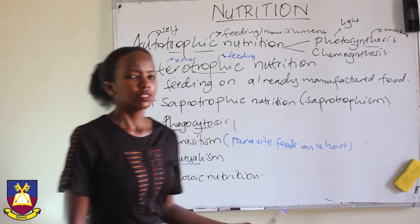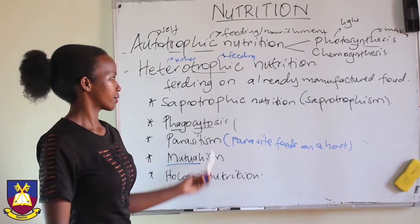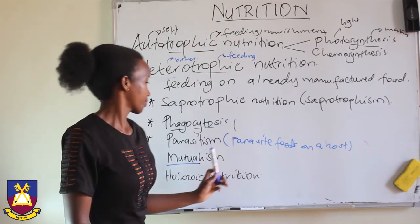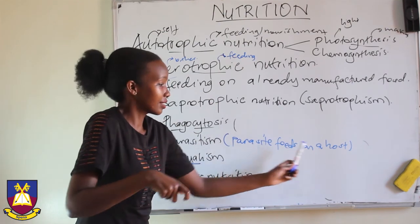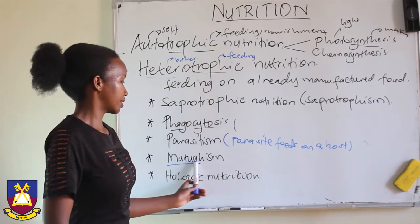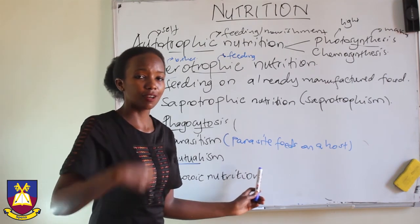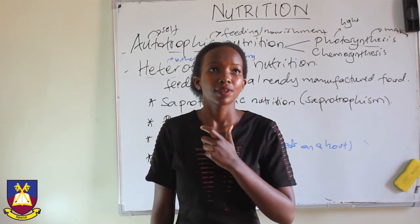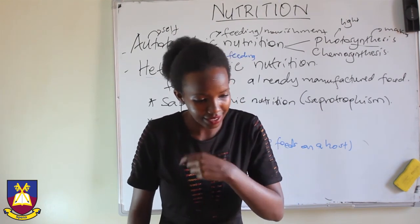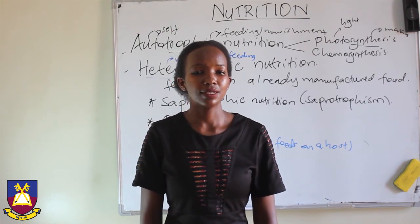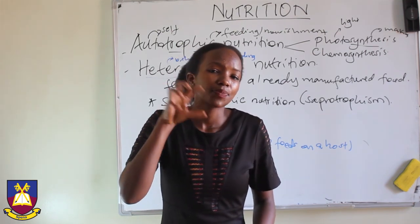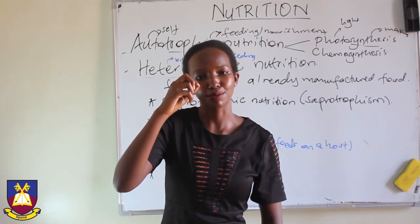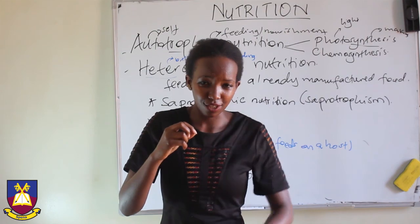Lastly is the holozoic form of nutrition, which differs from all the others. Saprotrophic feeds on dead matter, phagocytosis is cell eating, parasitism feeds on another at the cost of the host, mutualism involves feeding on another where that other organism also benefits. Holozoic nutrition involves actually taking in food, digesting it, and excreting that which has not been digested — literally putting food into the mouth, passing it through, where digestion takes place.